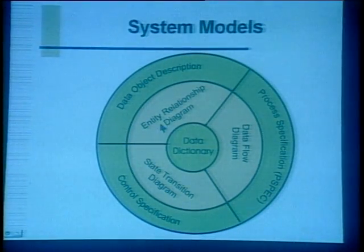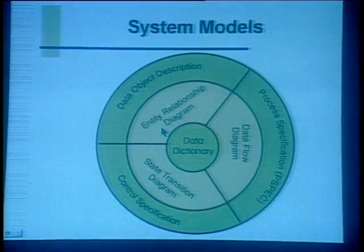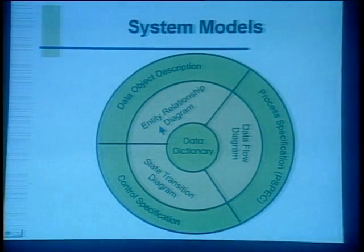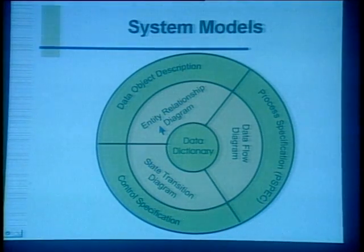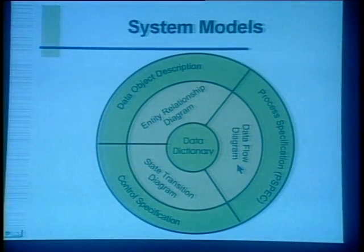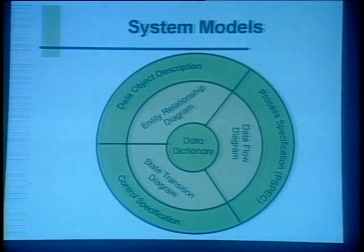These are three different tools used to model three different things of a software. We have already discussed how the entity relationship diagrams are used to model the data of a system. Today, we will be discussing the data flow diagrams and how they are used to model the process which is performed by the software.